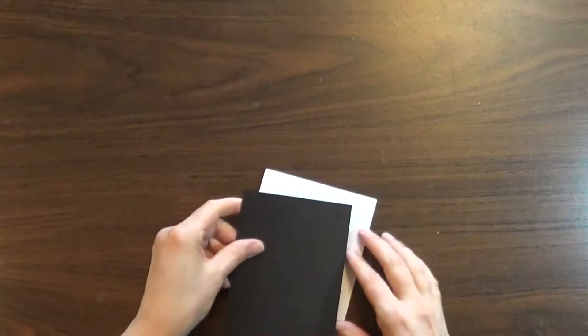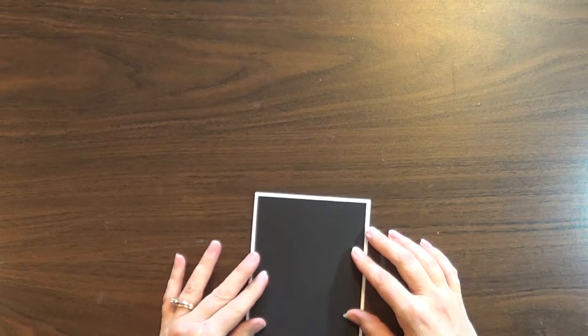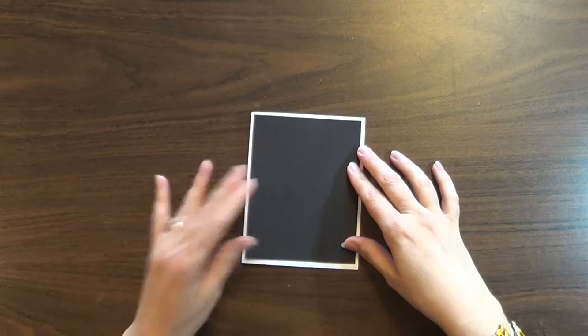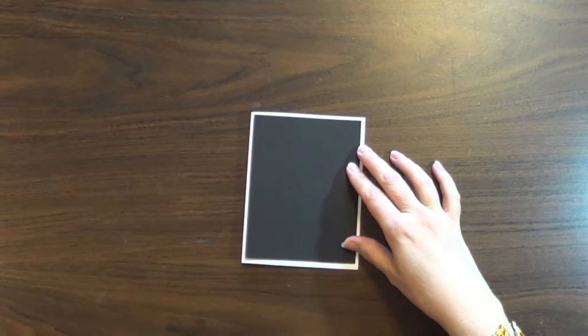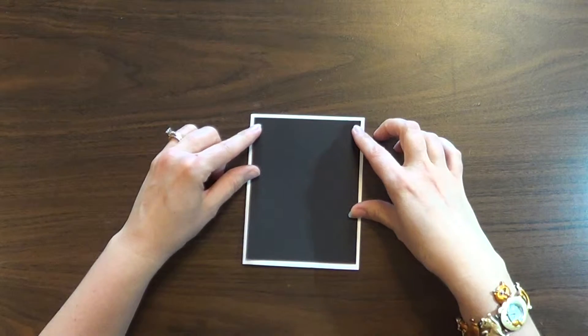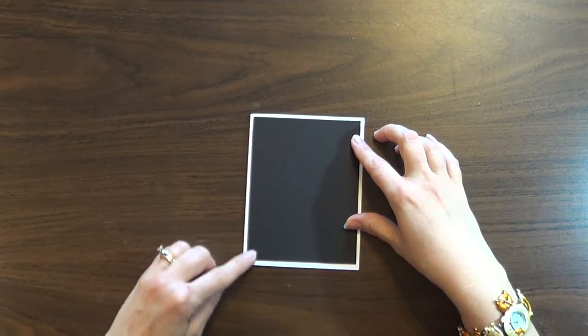So that would fit very nicely on top of your card. And then, your next layer down, you normally would cut another quarter inch down, so it would be three and three-fourths by five.